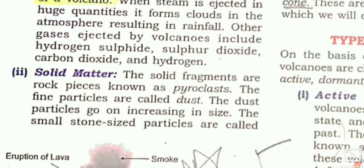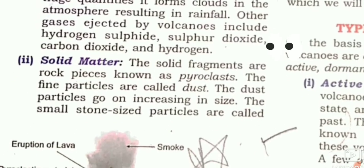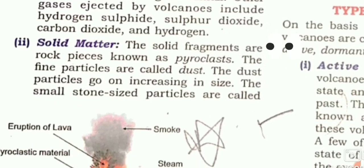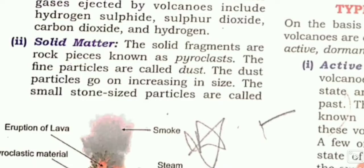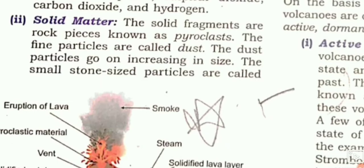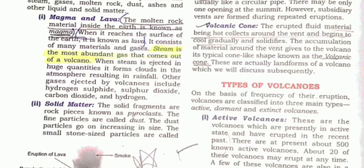Next is the solid matter. Solid fragments from rock pieces — as you can see in this picture — are known as pyroclasts. Small-size particles are also ejected during volcanic eruptions along with many other materials.